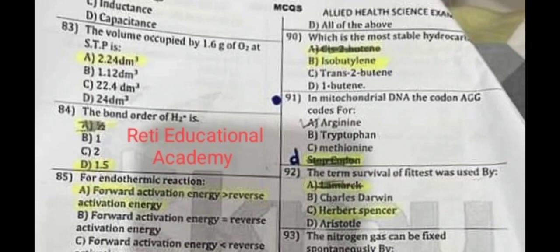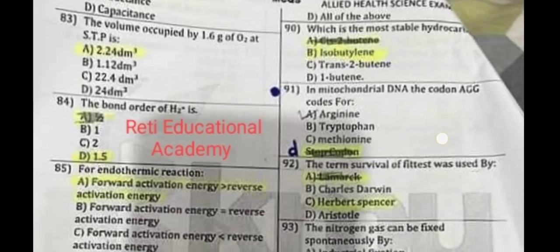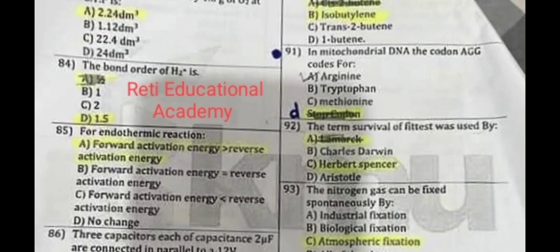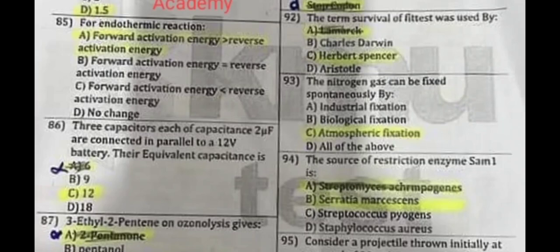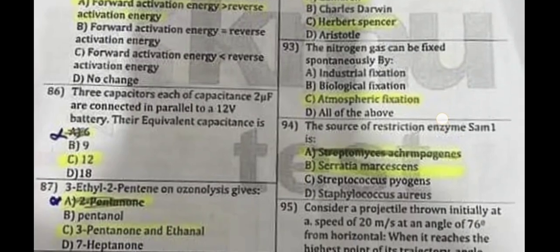Question number 83: The volume occupied by 1.6 grams of O₂ at STP is A. Question number 84: The bond order of H₂ is D. Question number 85: For endothermic reactions A is correct — forward activation energy is greater than reverse activation energy. Question number 86: Three capacitors each of capacitance 2 µF are connected in parallel to a 12-volt battery — their equivalent capacitance is 6 µF.